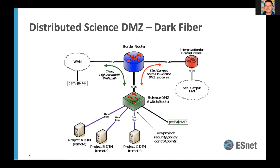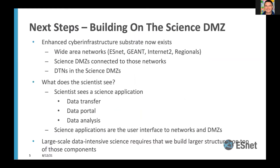For example, a cryo-EM or similar system that produces large amounts of data would be inefficient to transfer across a standard campus network. Extending the ScienceDMZ out to those remote locations makes sense because you can't put a cryo-EM inside a data center. On a campus, fiber access is typically prevalent, so you can extend out to those locations. Those are three quick examples of what you could be doing in your ScienceDMZ for your CCSTAR proposal. There are many other components as we scale this out and deal with wide area networks.